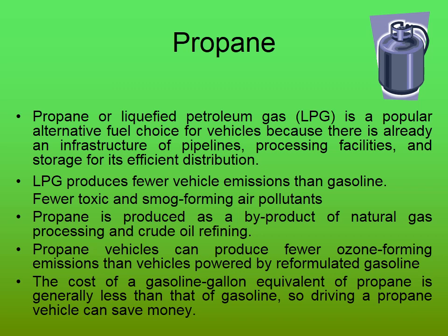Now propane, that is liquefied petroleum gas (LPG), is a popular alternative fuel choice for vehicles because there is already an infrastructure of pipelines, processing facilities, and storage for its efficient distribution. Such LPG gases are already being used in our kitchens as domestic fuel in India for many years. LPG produces fewer vehicle emissions than gasoline. LPG contains butane; in the case of CNG it contains methane. LPG contains butane and propane — mostly propane with butane.